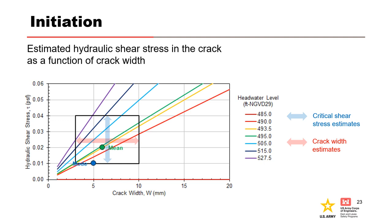The multicolored series of lines are the hydraulic shear stress as a function of crack width for different reservoir levels. For this case history, the reservoir levels of interest range from the peak reservoir elevation of 493.5 to elevation 485, which was the entrance location of the pipes. The rectangular box bounds the estimates of crack width, shown by the red arrows, and the critical shear stress for the embankment, shown by the blue arrows. The critical shear stress can be informed by the RMC erodibility parameters toolbox, and the crack width can be informed by the RMC concentrated leak erosion crack width and depth toolbox.